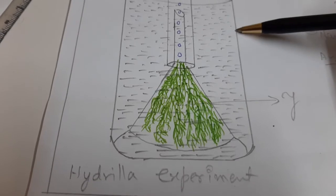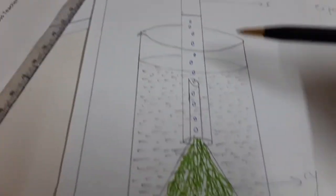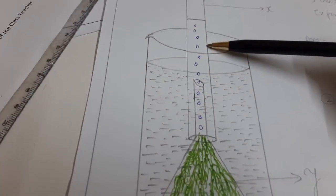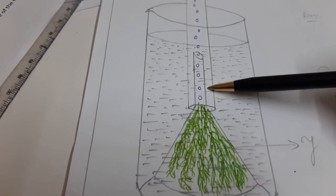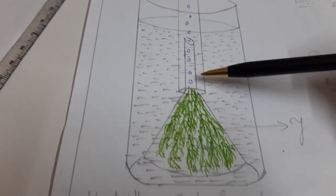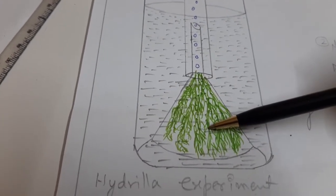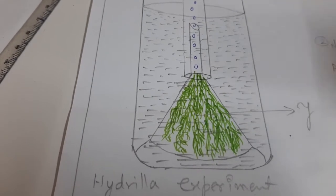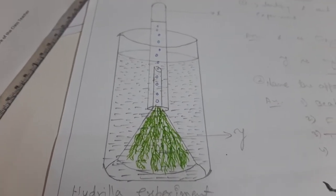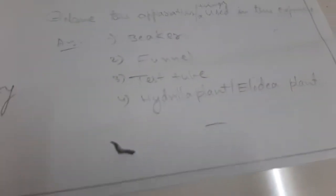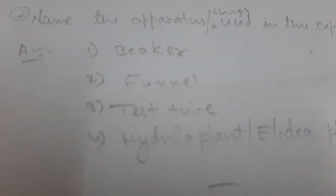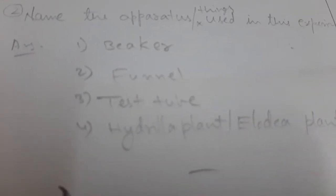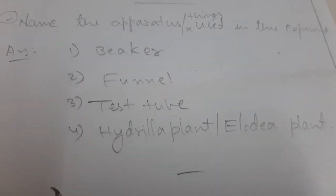Here it is beaker and test tube, funnel, and also Hydrilla plant or Elodia plant. These are the apparatus or things we used in this experiment: beaker, funnel, test tube, Hydrilla plant or Elodia plant.